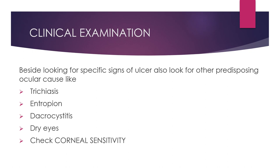Look for specific signs of the ulcer: lid edema, chemosis, circumcorneal congestion, and signs on the cornea including shape, size, location, color, and edges of the lesion, condition of the surrounding cornea, and presence or absence of hypopion. Also look for other predisposing ocular causes such as trichiasis, entropion, dacryocystitis, and dry eyes. Most importantly, always check corneal sensitivity in every case of corneal ulcer, irrespective of the cause.